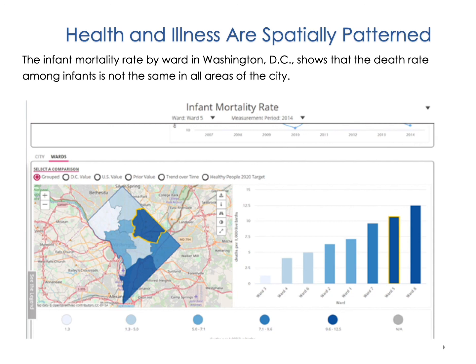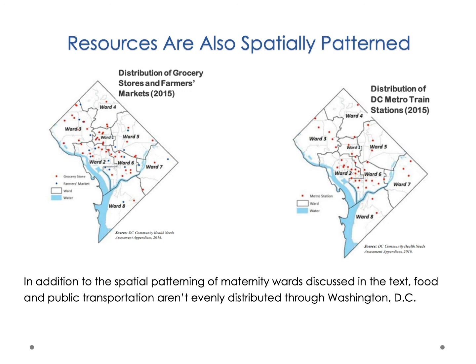Ward 5 is 58% African American, and Wards 7 and 8 are 92% African American, which explains some of the social patterning. But it's insufficient to just look at the composition of people to explain these outcomes. We also need to look at how the resources women require for a healthy life differ in the different spaces they live in — the question of health access. Access to healthy food is important throughout one's life and particularly during pregnancy, as is access to public transportation to reach doctor's visits and grocery stores.